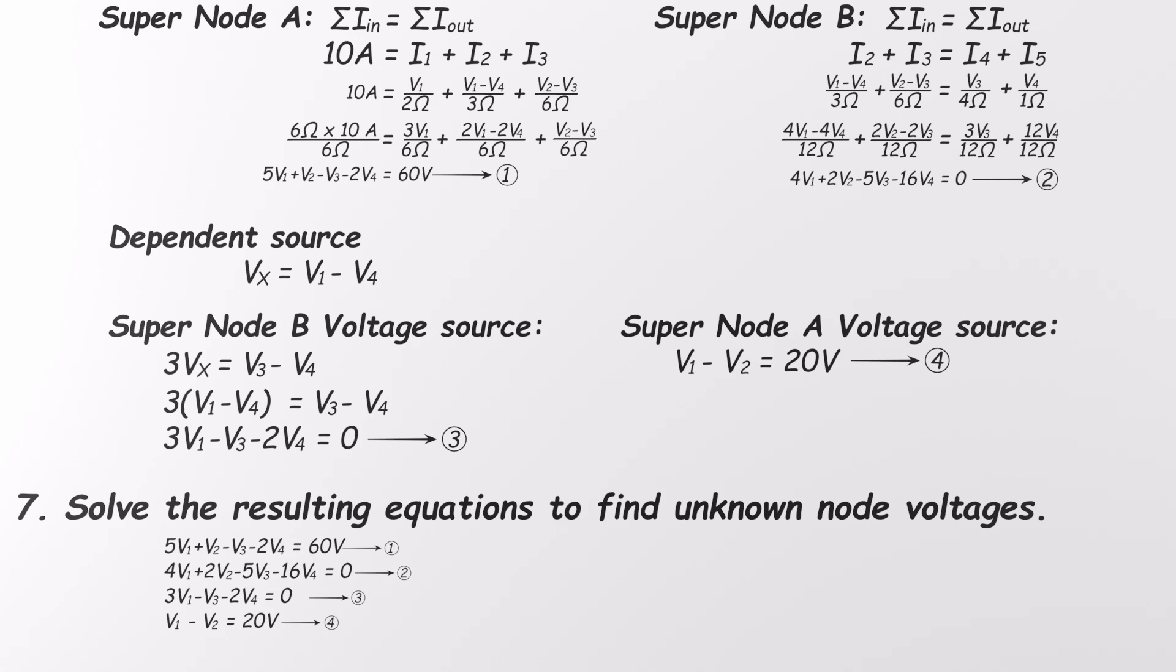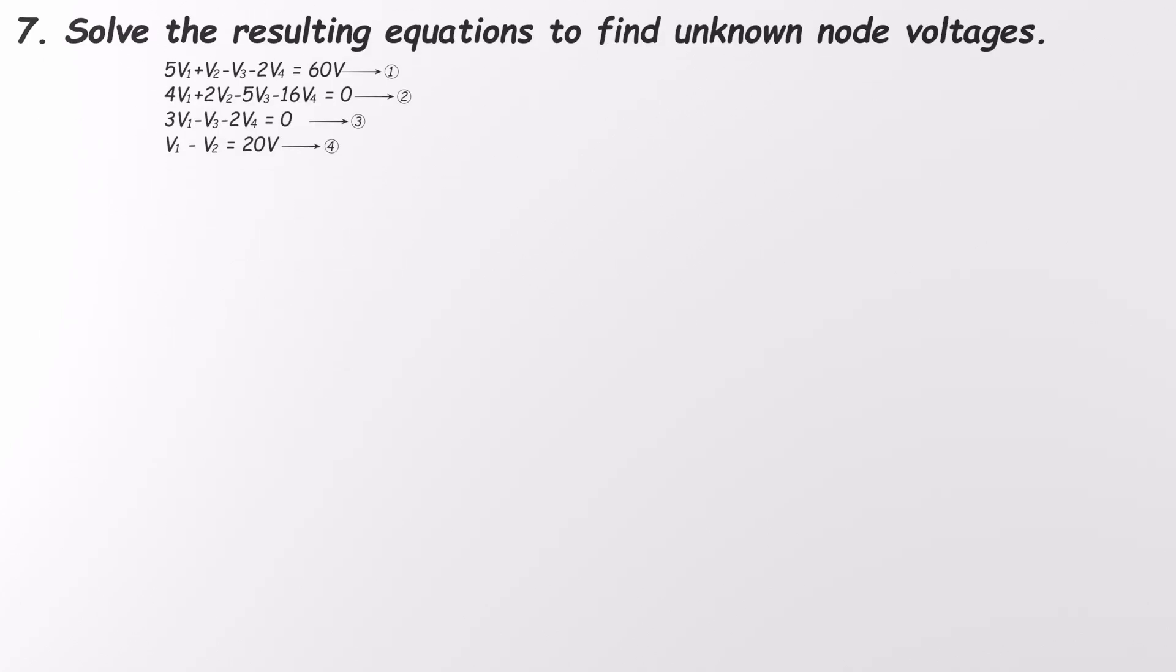Now we've got a nice little system of four equations with four unknowns. And here comes the fun part, solving for those node voltages. You can tackle this using matrix methods, substitution, or elimination. We'll go with some good old-fashioned algebra here, just to keep things hands-on. Use whichever method works best for you. Let's start with the fourth equation. V1 minus V2 equals 20. We'll rearrange that to make V2 the subject. V2 equals V1 minus 20. That's our fifth equation.